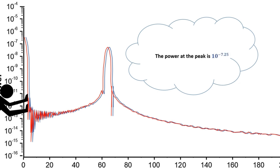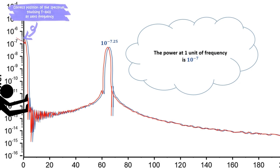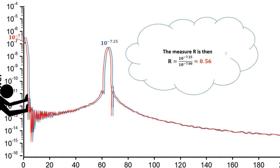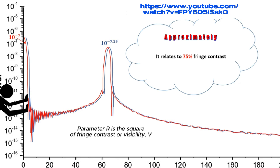The power at the peak is 10 to the minus 7.25. The power at one unit of frequency is 10 to the minus 7. The measure r is then 0.56. It relates to 75% fringe contrast.